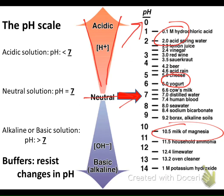Oven cleaner is amazingly alkaline. You're always supposed to wear gloves when you use that stuff. If you've ever had to strip wax off a floor or use oven cleaner, those are very, very basic, and they feel very slippery. It feels kind of neat for a second, and then it starts to tingle and eat away at your skin. Acids, on the other hand, aren't going to feel slippery — they'll feel very prickly and burny very quickly. So both acids and bases are going to eat away at your skin.